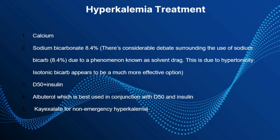Some more treatments include sodium bicarb, though there is debate on using 8.4% sodium bicarb because it is very hypertonic, causing a solvent drag effect that pulls potassium into the cells — but about 20-30 minutes later it slowly seeps back out. Isotonic sodium bicarbonate is noted to be a more effective option. Next is D50 with insulin, which pushes potassium into the cells. You can also use high amounts of albuterol in conjunction, though some studies show albuterol causes an initial influx of potassium into the serum before it shifts into the cells. In hospitals, K-exalate is used but can take hours to days to work and isn't used in emergency settings.